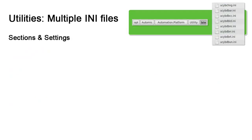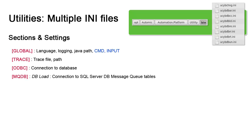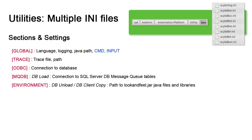Utilities provide database maintenance and administration like loading, unloading, archiving, reorg, and more. Each utility has a matching INI file, and these vary from one to the next. Every utility INI has a global section which contains language and log settings, but contents vary based on the utility. For example, the dbload utility loads AE's data structures. dbload's INI file has a CMD setting that invokes look-and-feel.jar to access dbload's Java-based user interface. In this INI, you also find the input setting which points to the data file structures. By default, it points to the db directory in the installation package. Trace sets trace settings. The ODBC section stores the database connection settings since most utilities must connect to the database. dbload has an MQDB section to connect to the SQL Server message queue tables. dbunload and client copy have an environment section that points to look-and-feel.jar.